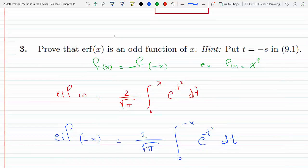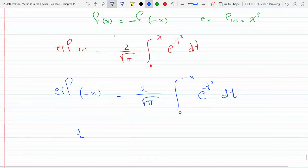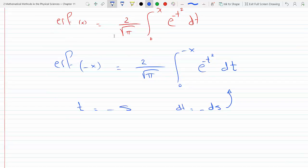Now notice, as the hint says, if I plug in t equals minus s, that means dt, when you differentiate, you can get dt as a function of ds would be minus ds. So I could replace dt with minus ds. So plug it there and we would get erf of minus x would equal 2 over square root pi, integral from zero to minus x, e to the minus s squared, and instead of dt I have minus ds.